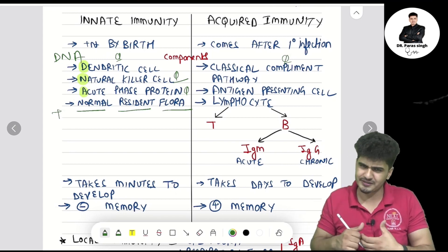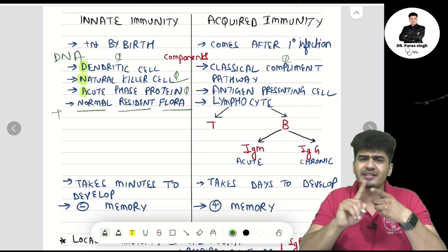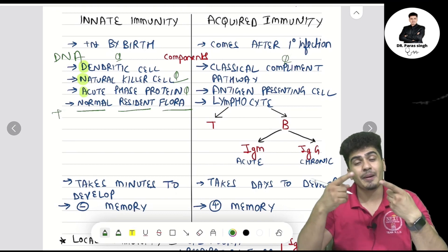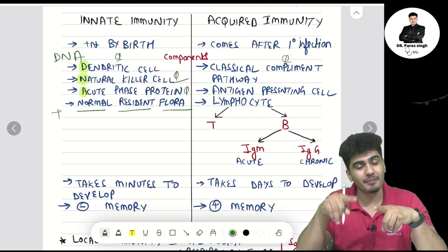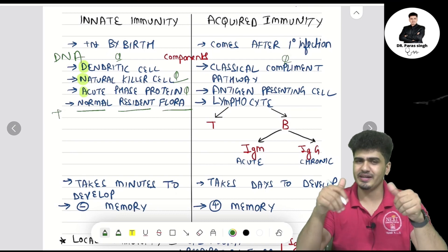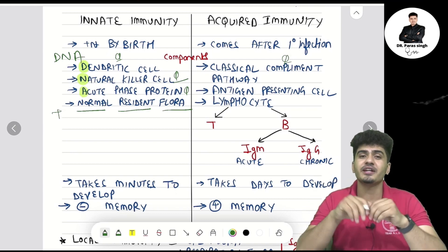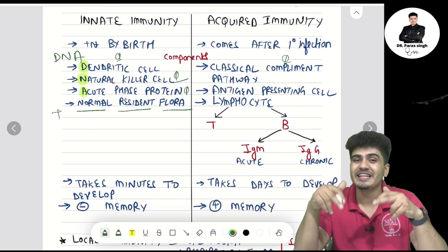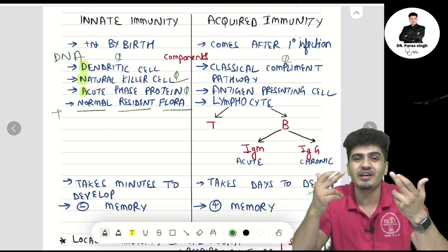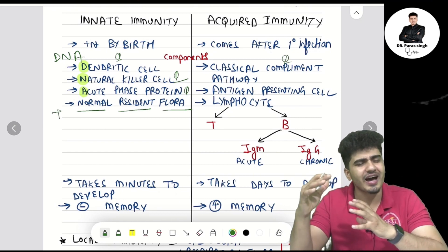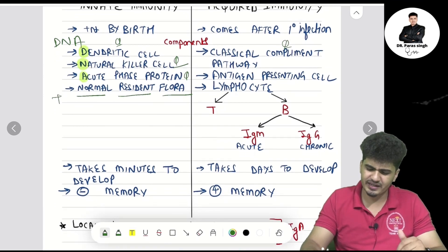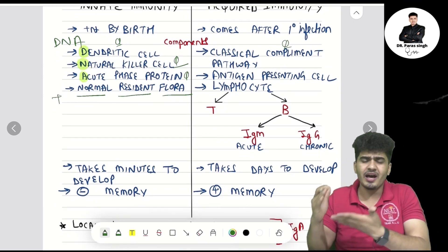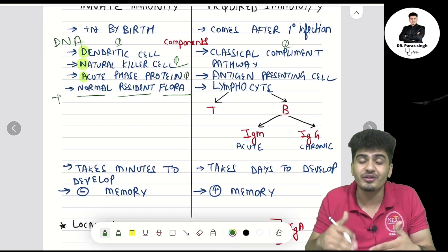Lymphocytes are of two types: B lymphocytes and T lymphocytes. B lymphocytes are produced and matured in the bone marrow. T lymphocytes are formed in the bone marrow but matured in the thymus — T for thymus.